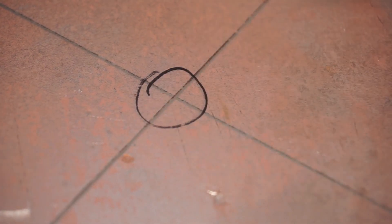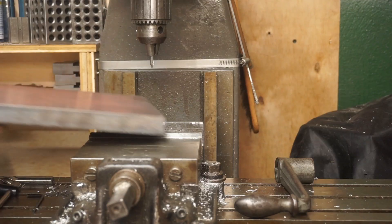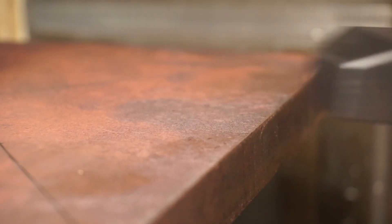Before drawing the circle's perimeter I'm going to mark and drill its center hole. This will give me a feature I can indicate against later.